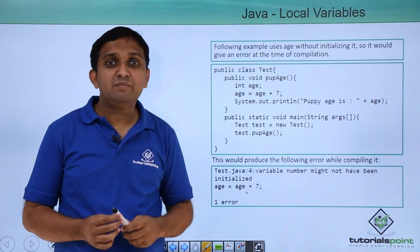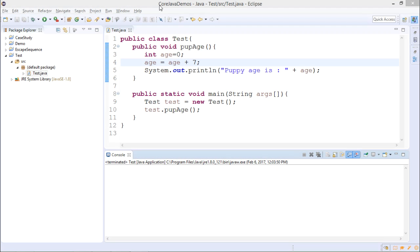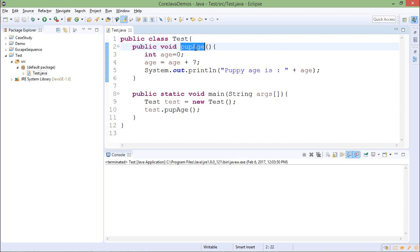So I will implement this program using Eclipse. This is a demonstration to understand local variables in Java. There is a simple code where one class test is written. In class test, pupAge is a method.